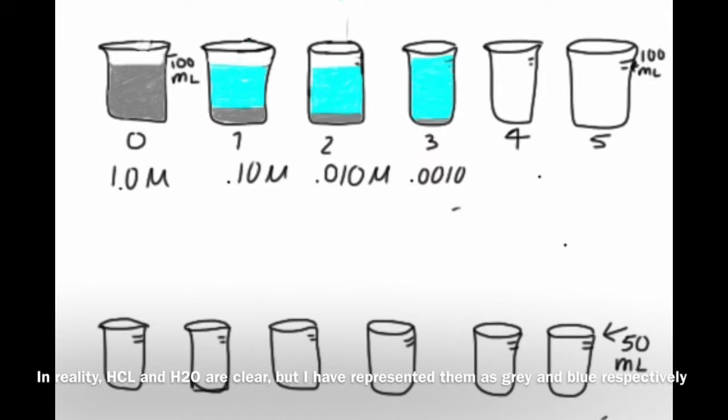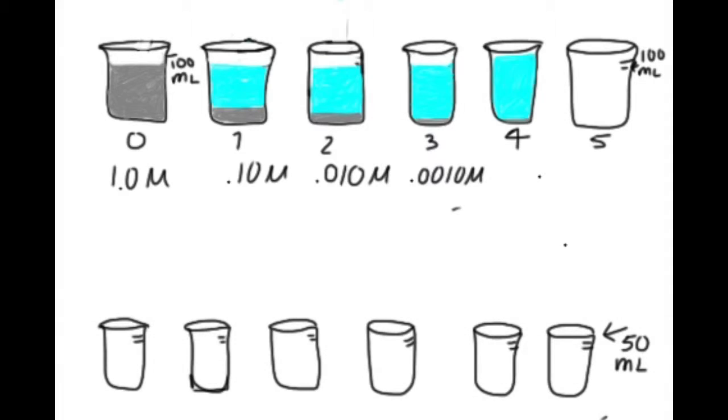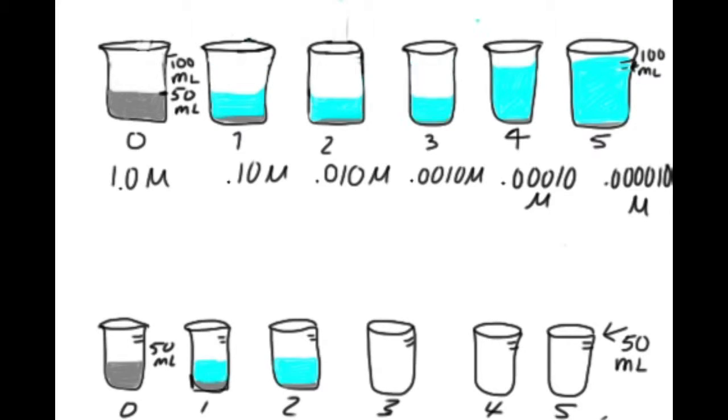Repeat in beakers 3, 4, and 5. Now take half of the solution from the first set of beakers and add it to the second set. Label the second set 0 through 5.